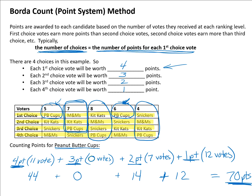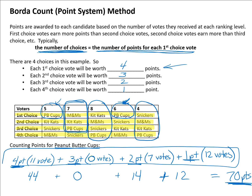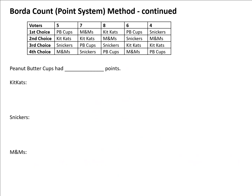It's important to organize yourself by writing down the points and votes clearly — that's a good strategy. Now let's do the same calculation for Kit Kats, Snickers, and M&Ms. We already know Peanut Butter Cups had 70 points.